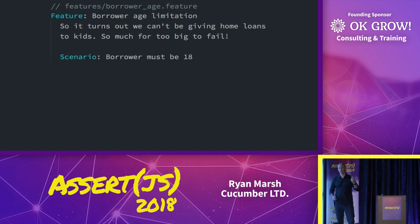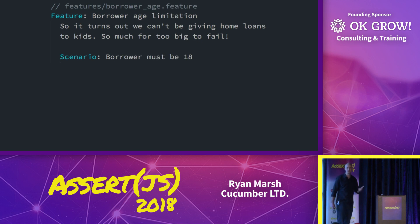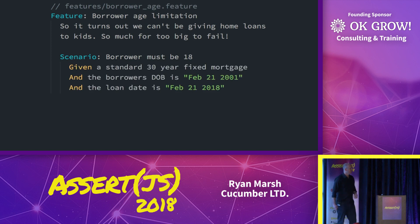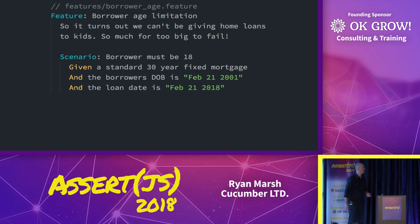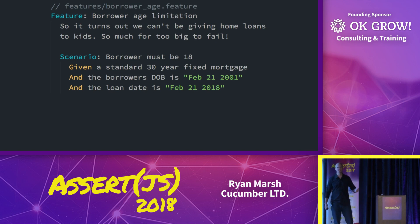We have a feature — borrower age limitation — and a description that can be anything that's not parsed. Then we have something called a scenario, which has a title. We also call these examples. And then we have the keyword 'given' — that's yellow, that's got to mean something. 'Given a standard 30-year fixed mortgage and the borrower's date of birth is...' and 'the loan date is...' — we're setting something up here, setting up the world. This is context.